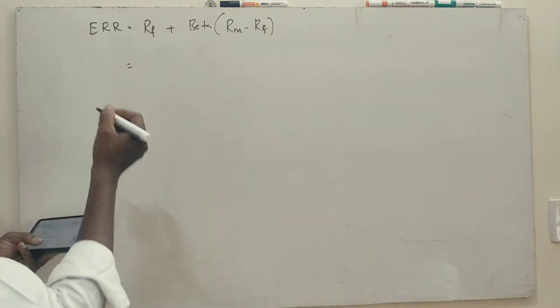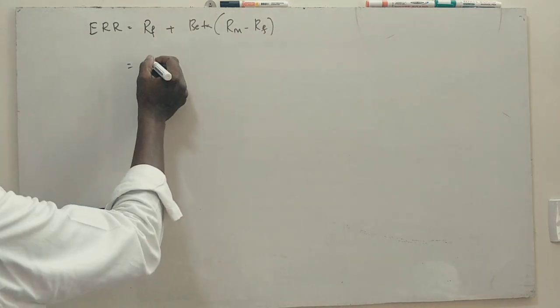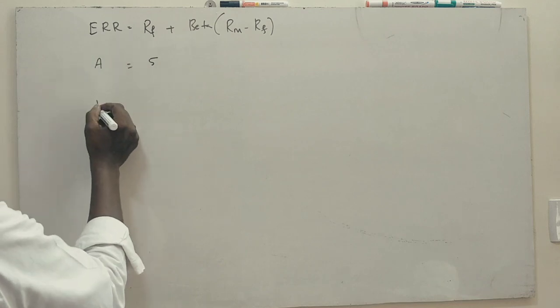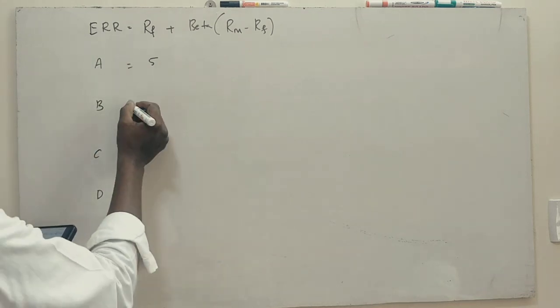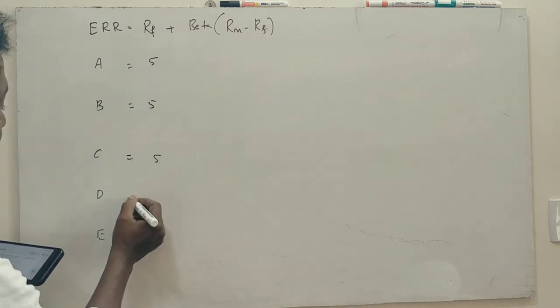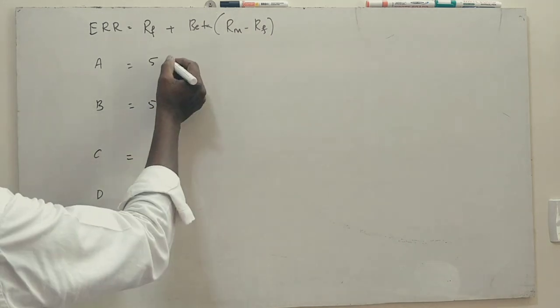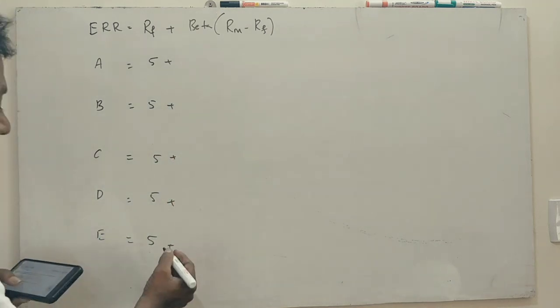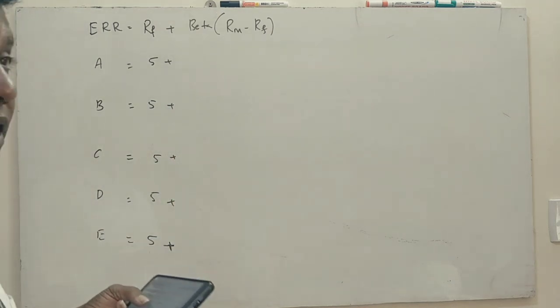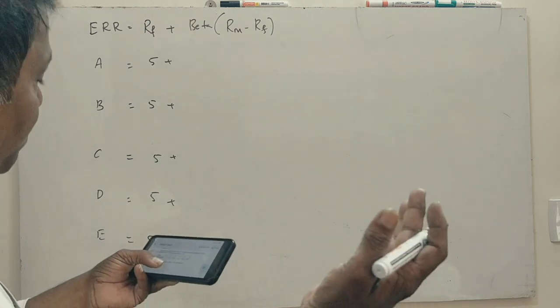So, this is risk-free question. So, this is A, B, C, D, E. 5% is equal to 5%. So, beta is nothing but standard deviation. You know, standard deviation is equal to probability.